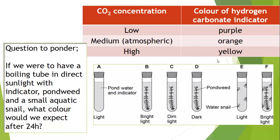Here's a summary table to help remember the color changes — you do need to remember these for GCSE and be able to manipulate them in questions. There's also a cheeky question: if we had a boiling tube in direct sunlight with hydrogen carbonate indicator, pondweed, and a small aquatic snail, what color would we expect after 24 hours? Have a crack at that. Thanks very much — I hope that helps.